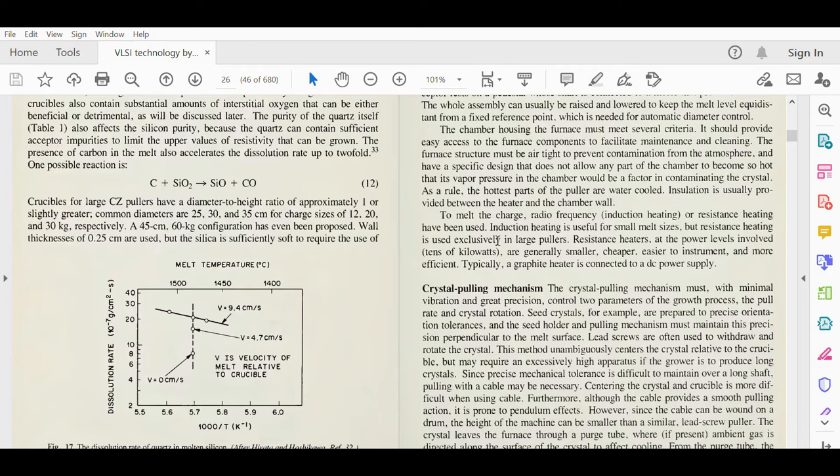To melt the charge, radio frequency or resistance heating have been used. Induction heating is useful for small melt sizes, but resistance heating is used exclusively in large pullers. Resistance heaters at the power levels involved are generally smaller, cheaper, easier to instrument, and more efficient. Typically, a graphite heater is connected to a DC power supply.